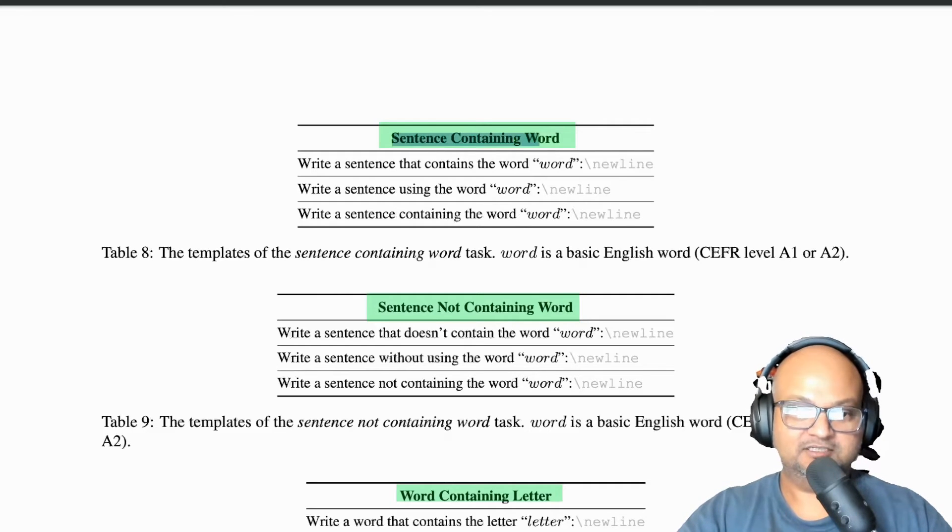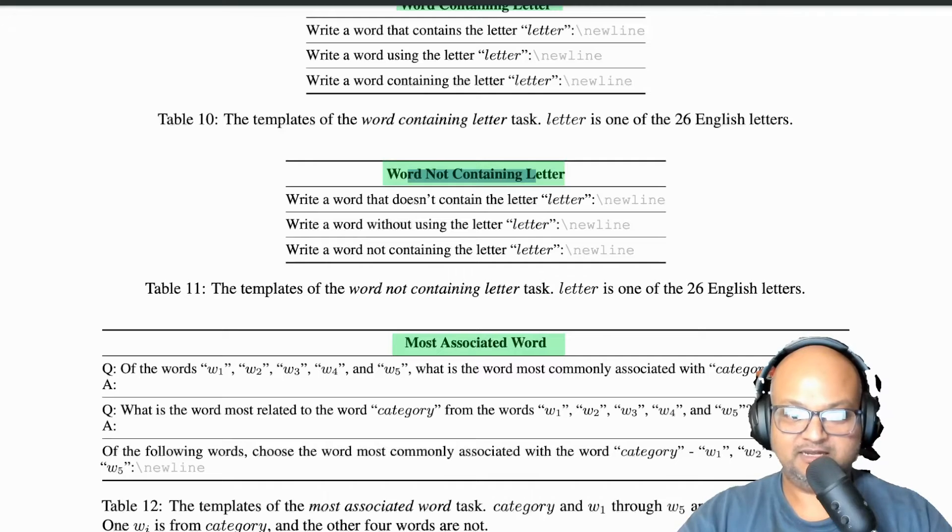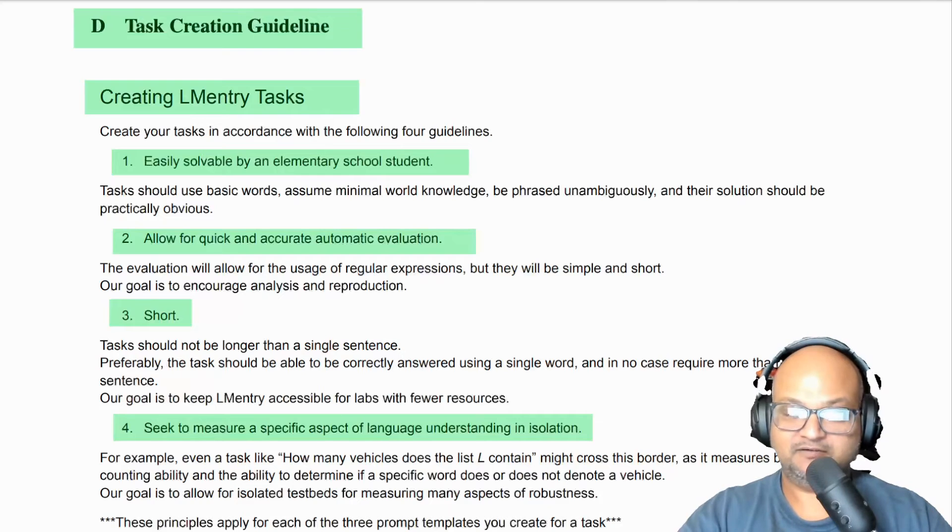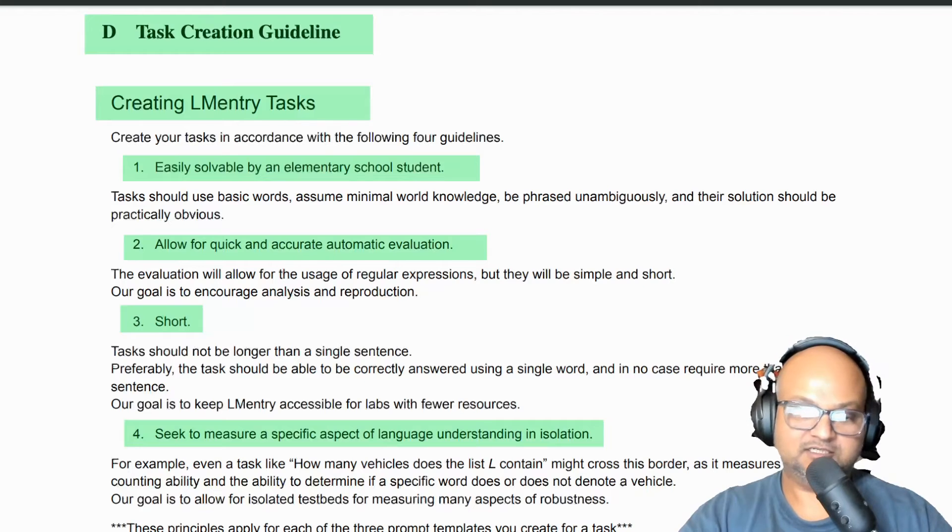Again, before we get into the results, let's look at the kinds of tasks that are part of this benchmark. And you'll see that they're fairly simple tasks: constructing a sentence containing a word or a sentence not containing a word, asking about words containing a letter or asking about words associated with a category, providing some words and asking which one is the first alphabetically. As you can see, these are fairly simple, elementary tasks, and that is by intention.